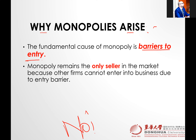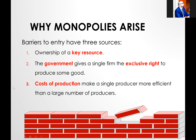Monopoly remains the only seller due to this barrier because other firms cannot enter the market. There are three sources — three ways — in which monopoly can arise. Number one: ownership of a key resource.